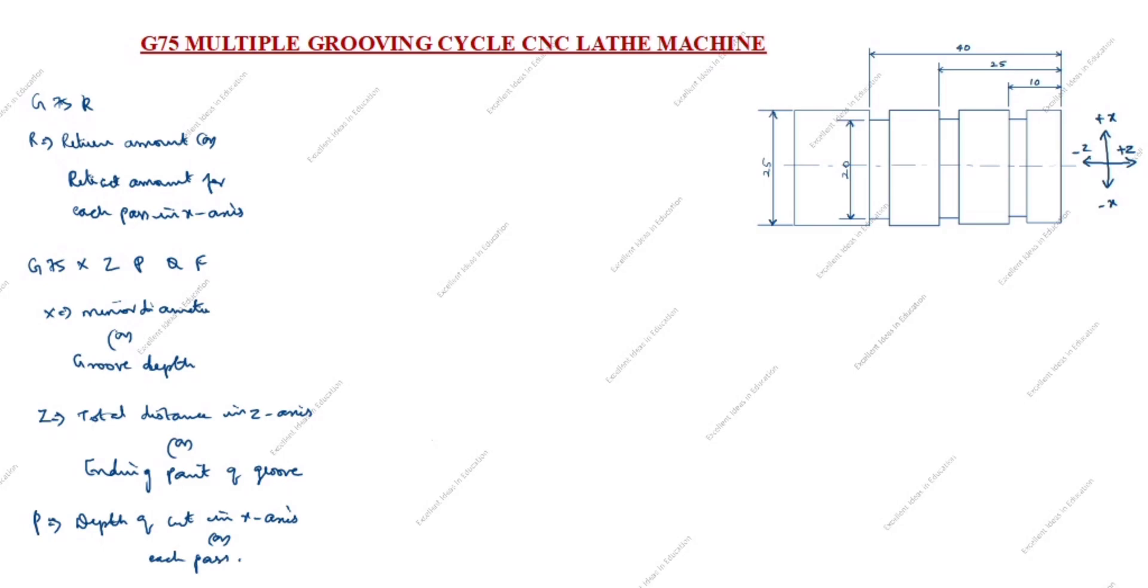Q is the distance between consecutive grooves in Z axis or moving distance in Z axis. F is feed rate.